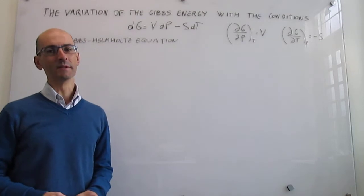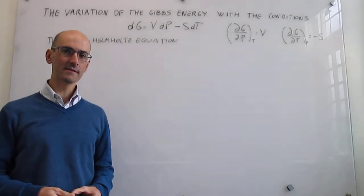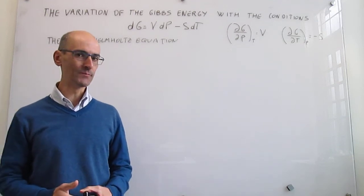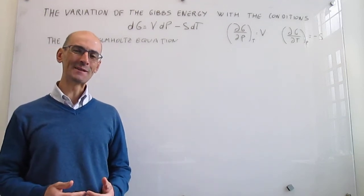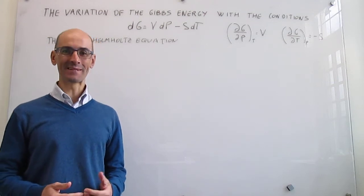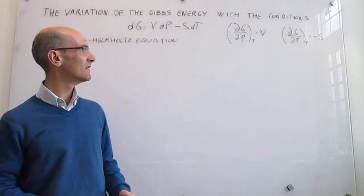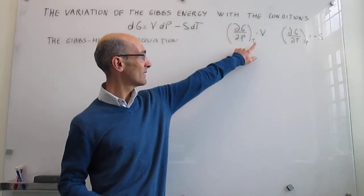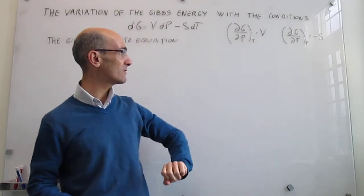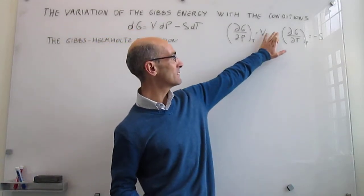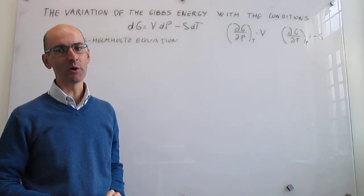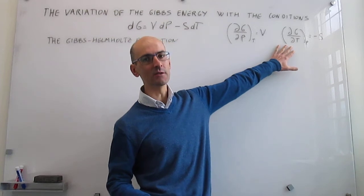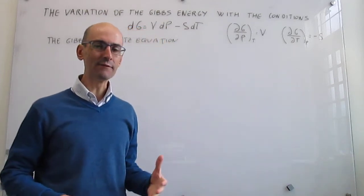In this video we delve a little bit more deeply into the dependence of the Gibbs energy on temperature by deriving the Gibbs-Helmholtz equation. In the last video we saw how the Gibbs energy depends on its natural variables, which are pressure and temperature. The dependence of Gibbs energy on pressure at constant temperature is the volume, and the first derivative of the Gibbs energy with temperature at constant pressure is the minus molar entropy.